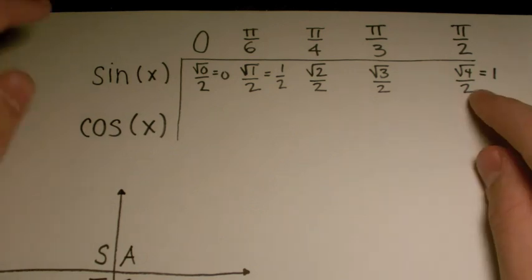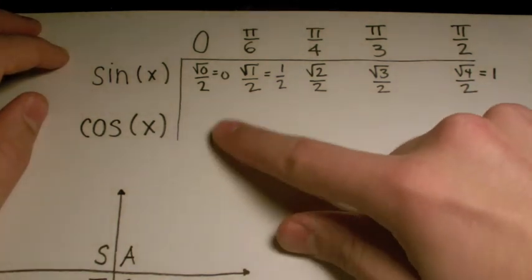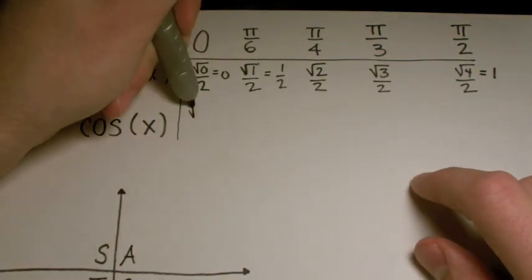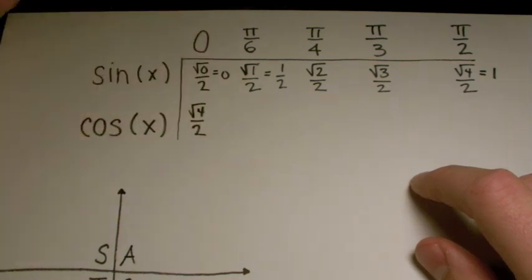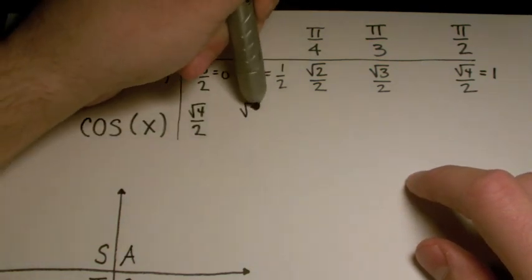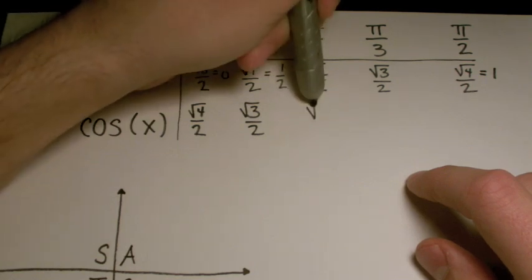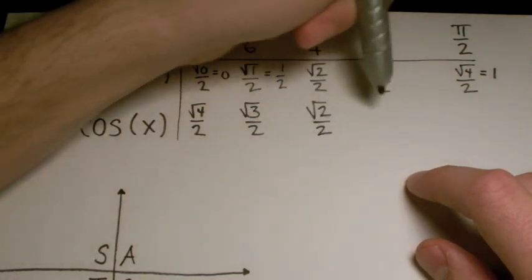Because you know what? Cosine is just the reverse. The cosine of 0 is going to be √4 over 2. The cosine of π/6, √3 over 2. π/4, √2 over 2.